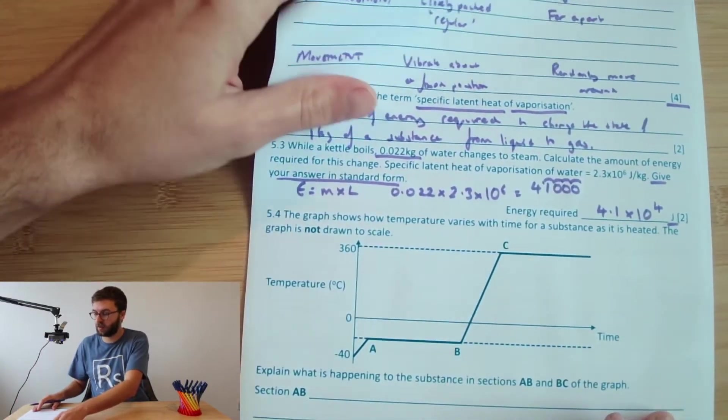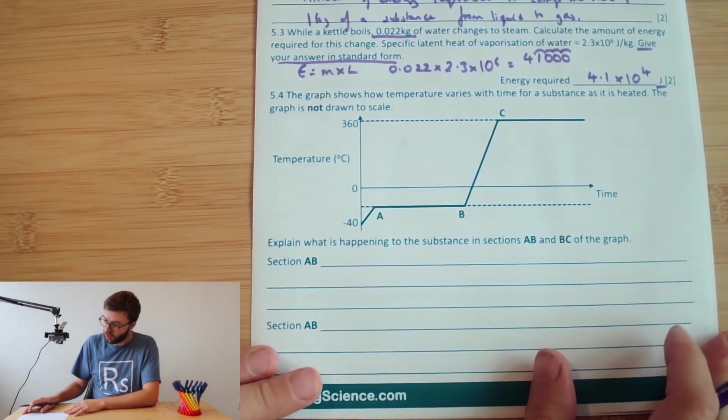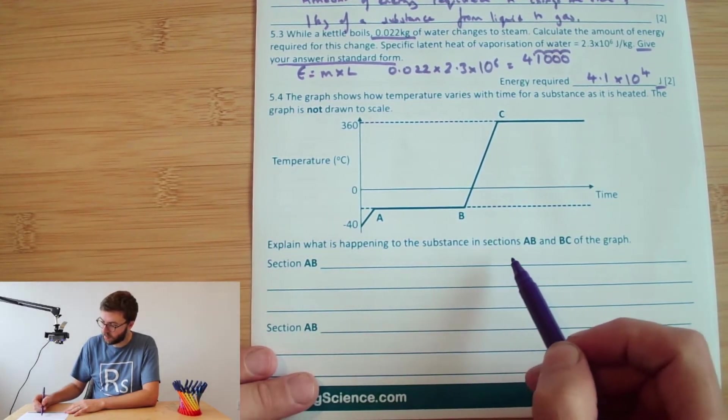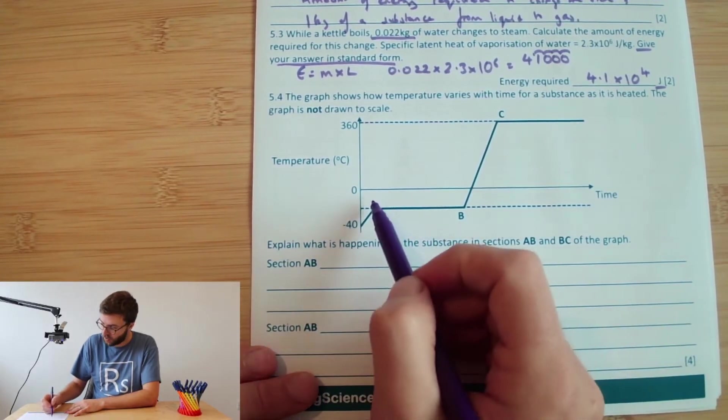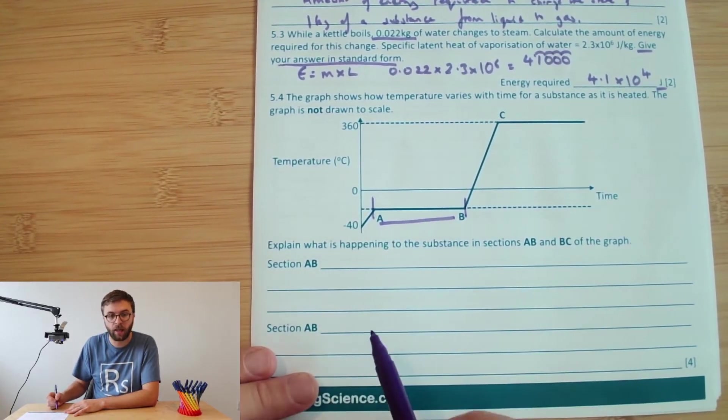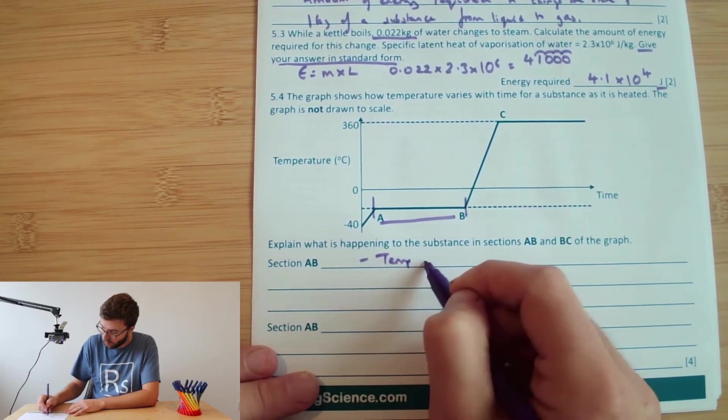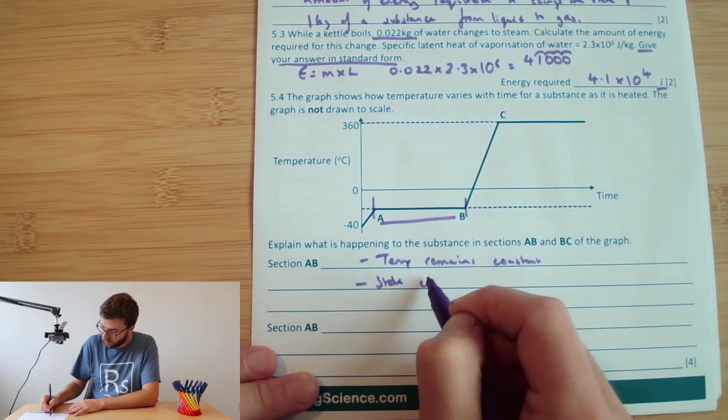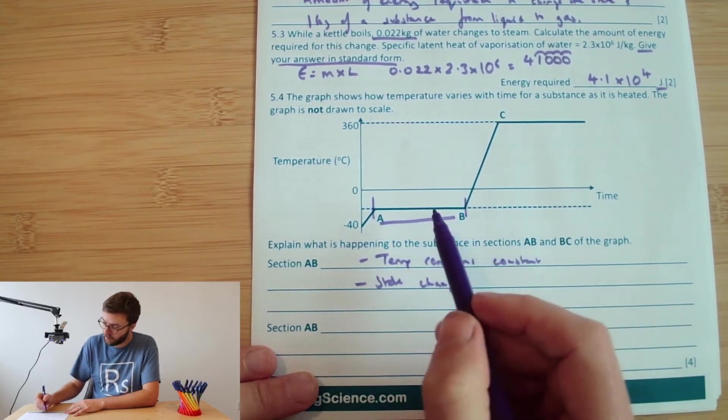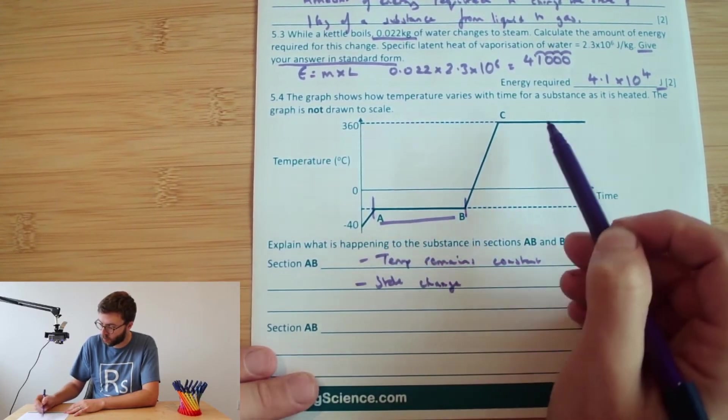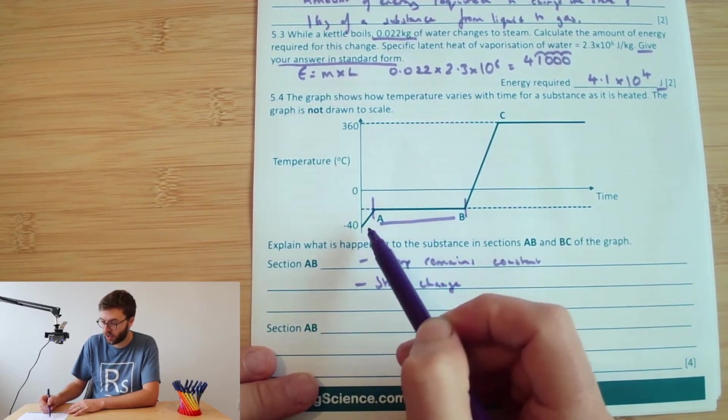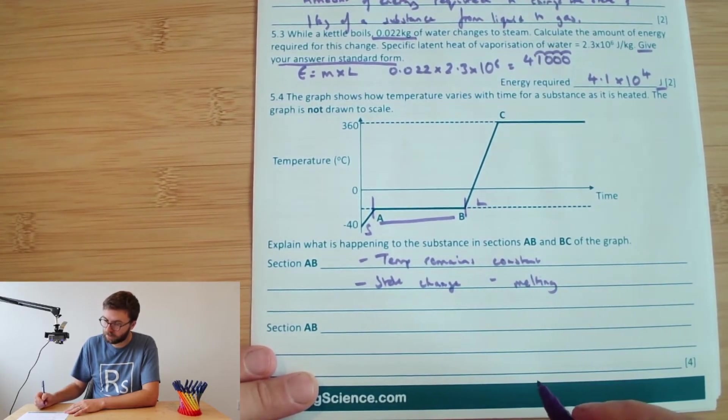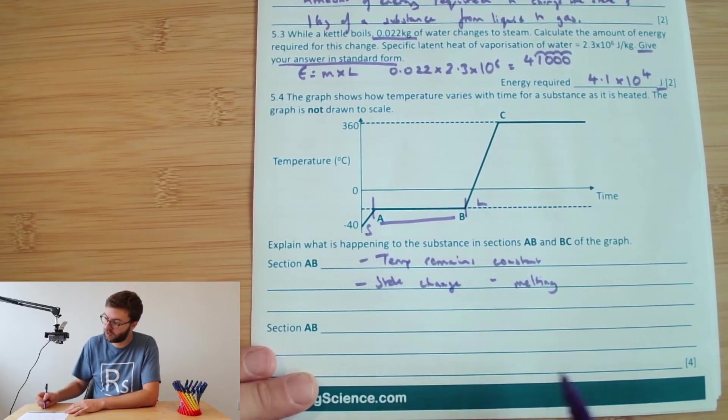And question 5.4. The graph shows how temperature varies with time for a substance that is heated. The graph is not drawn to scale. Explain what's happening to the substance in sections AB and BC of the graph. So let's have a look at AB. So this point here, we can clearly see that the temperature remains constant. And that indicates to us that therefore there is a state change occurring. We can be a bit more precise on the state change because we can see that it's happened once and twice. So therefore we know it's the first state change. And therefore that will be the state change from solid to liquid. So we can say that it is melting.